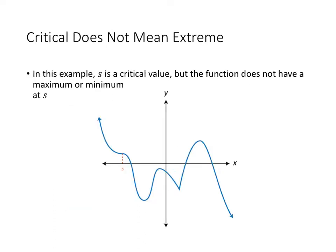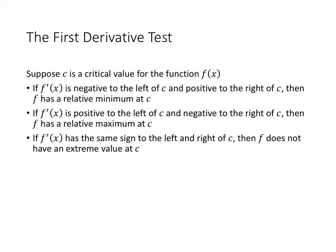We want to be careful, though. Just because the derivative is 0 or undefined does not mean we have a maximum or minimum value. So how can we tell whether or not a critical value is actually an extreme value? We have something called the first derivative test. It tells us that we want to make sure the derivative of the function is actually changing sign at the critical value.